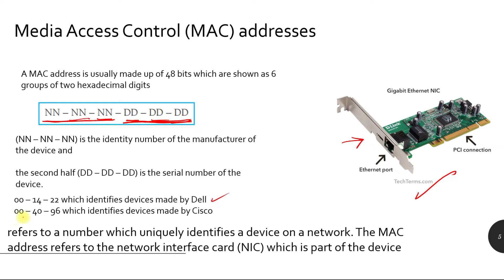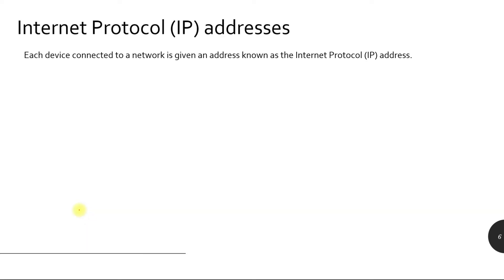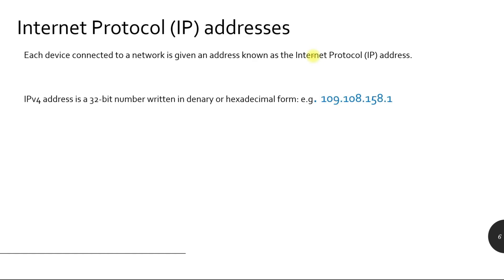The third use of the hexadecimal number system is IP addresses, or Internet Protocol addresses. Each device connected to a network is given an IP address. The IP version 4 address is a 32-bit number written in denary form, where every group represents 8 bits — four groups of 8 bits giving a total of 32 bits.